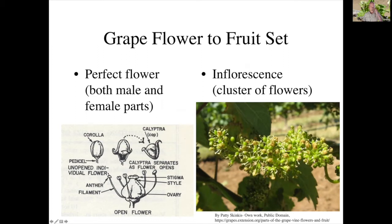In addition to these parts, there are flower petals which in the grapevine are fused as a corolla. As the flower develops, it forms a cap that pops off the flower during flowering, known as a calyptra. This separates from the base and pops off, allowing pollen to fertilize the eggs in the ovary.